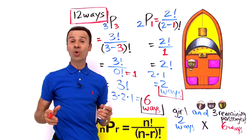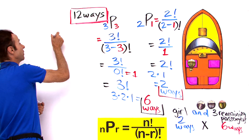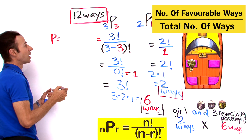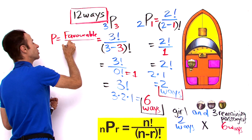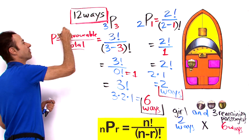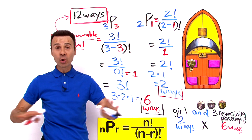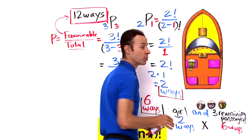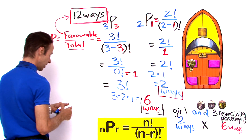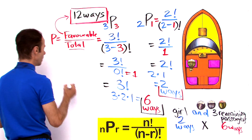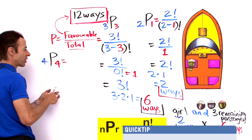Now for part 2, we work out the probability of this occurring. Probability equals the favourable events all over the total number of events. We have worked out the favourable arrangements — that is 12 ways. Now we need the total number of unrestricted arrangements for 4 seats and 4 people with no conditions.